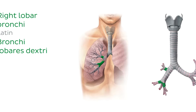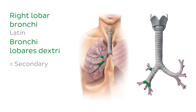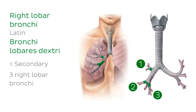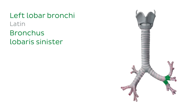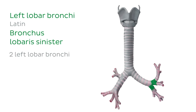Each main bronchus splits into lobar or secondary bronchi; however, this differs between the left and right bronchi. In both illustrations, we see the right lobar bronchi, of which there are three, highlighted in green. Each lobar bronchus travels to a different lobe of the right lung. The left primary bronchus only splits into two lobar bronchi, because the left lung has two lobes instead of the three lobes the right lung has.